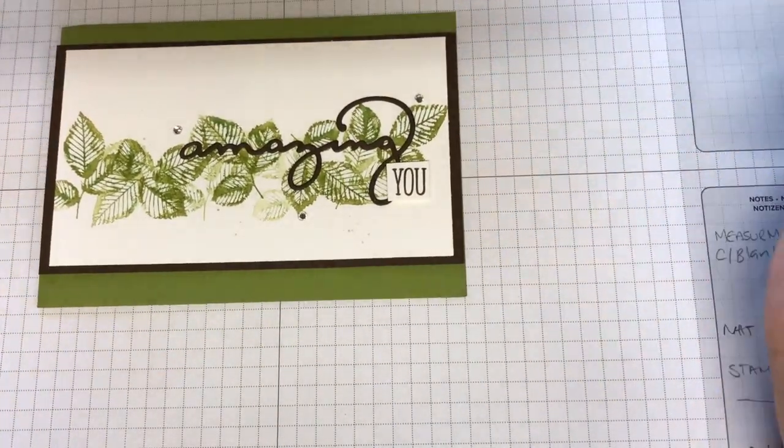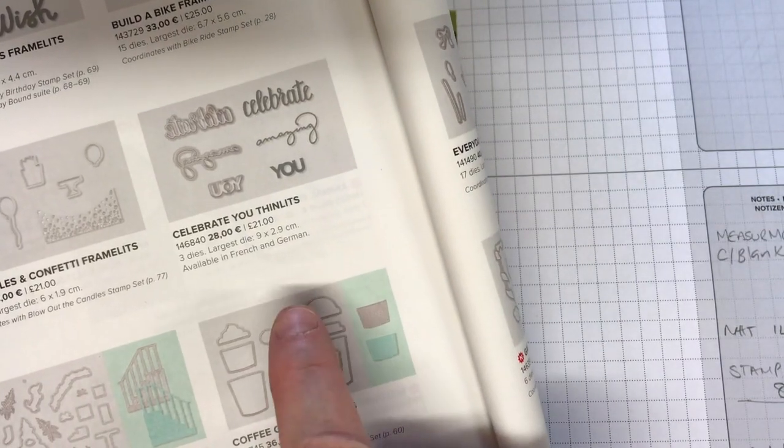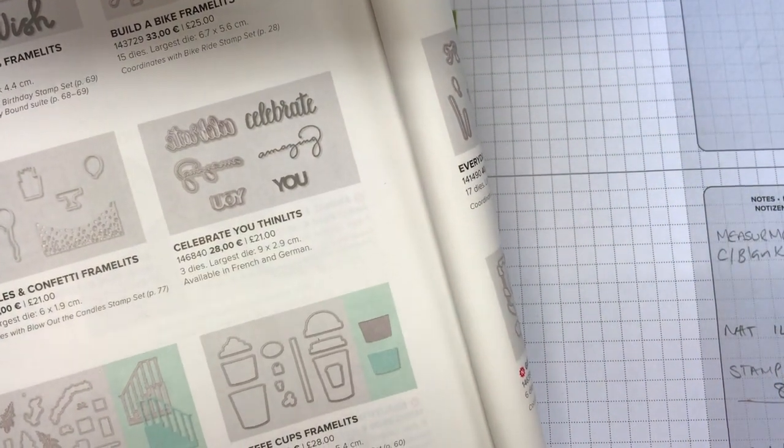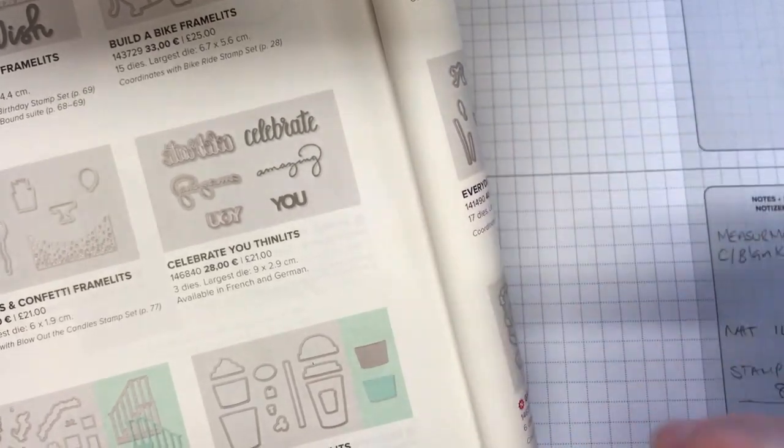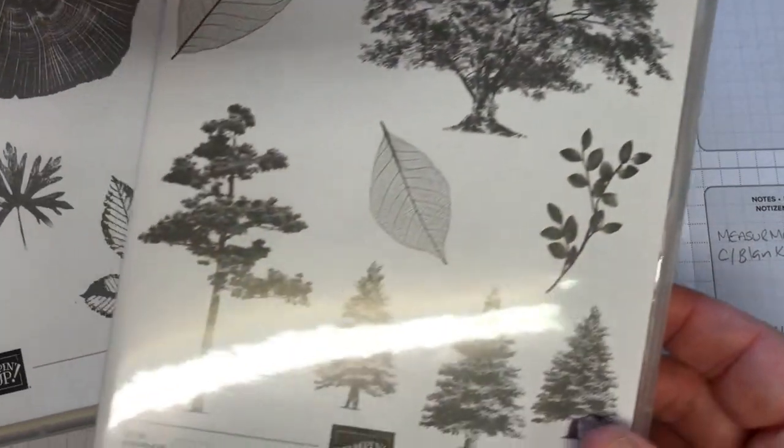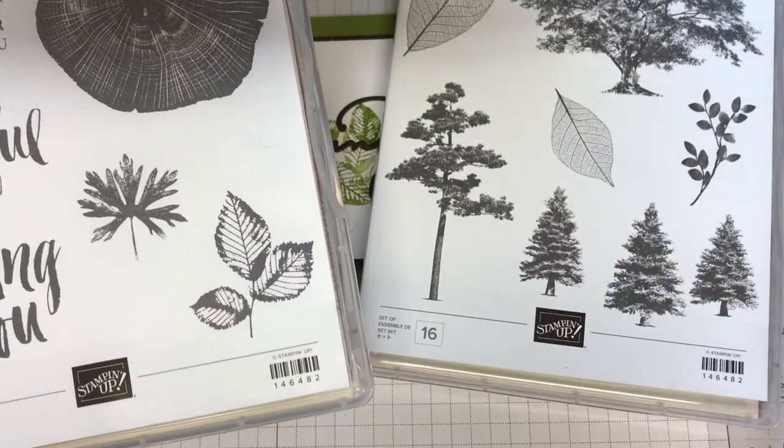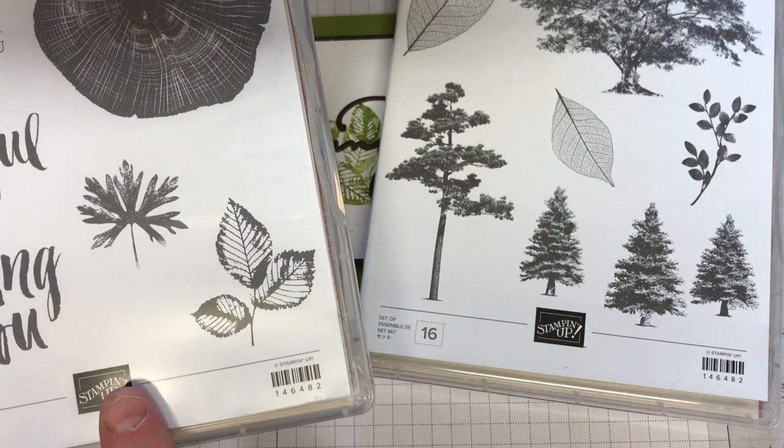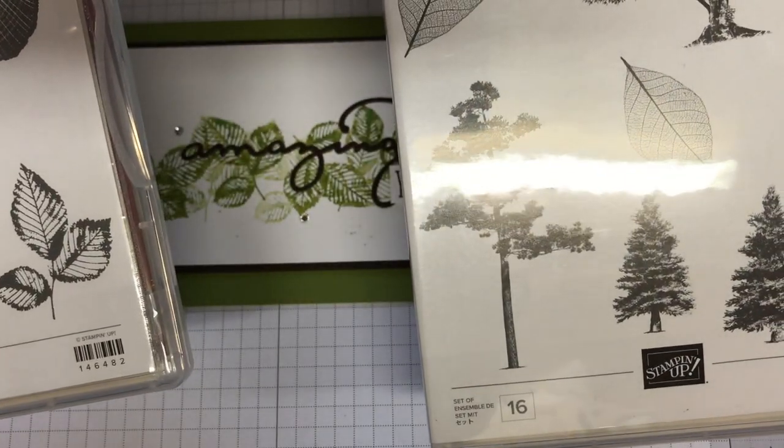I wanted to showcase the Celebrate You Thinlits which is going to be my product of the week, just here on page 126. You get three different sentiments for £21 and I've used it quite a bit lately, so I will be sharing more cards on my blog. I've coupled it today with the Rooted in Nature stamp set. Here's the stamp set here and I've used the leaves. It's £39 for the set, 16 clear mount on page 143.